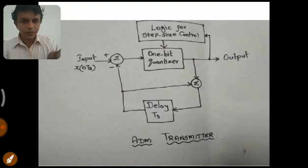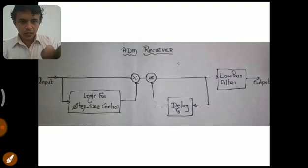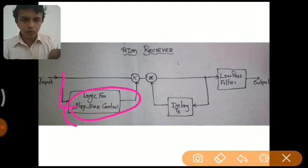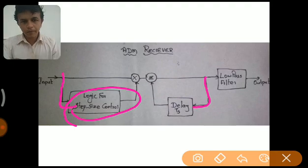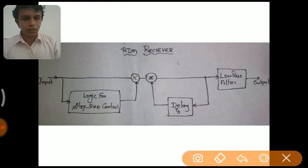In the receiver, the transmitted signal becomes the input to the adaptive delta modulation receiver. There is a feed-forward path which has a logic for step size control block. The output of that block is multiplied with the input signal and then added with the output of the delay block present in the feedback path. The output is then passed through a low-pass filter, which reduces the harmonics present in the higher frequency signal, and the output gives the actual reconstructed input signal.